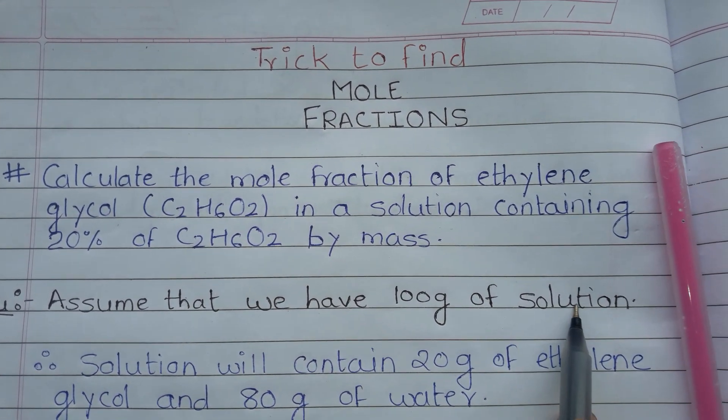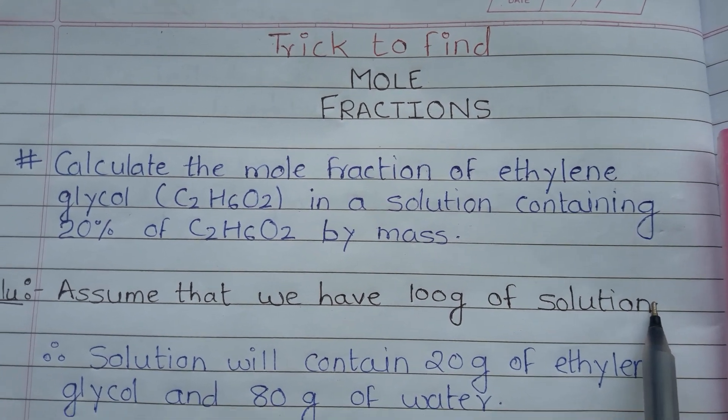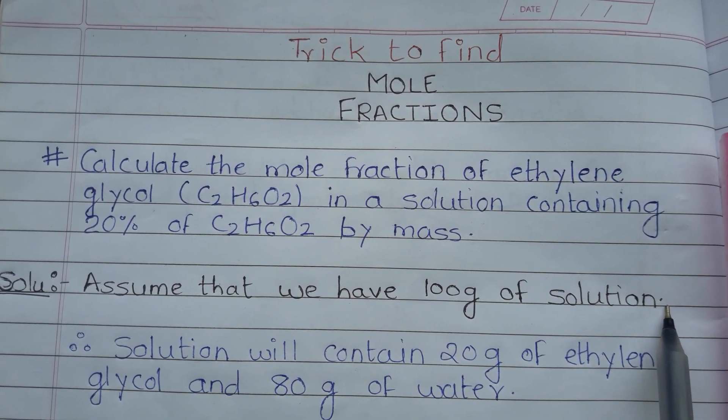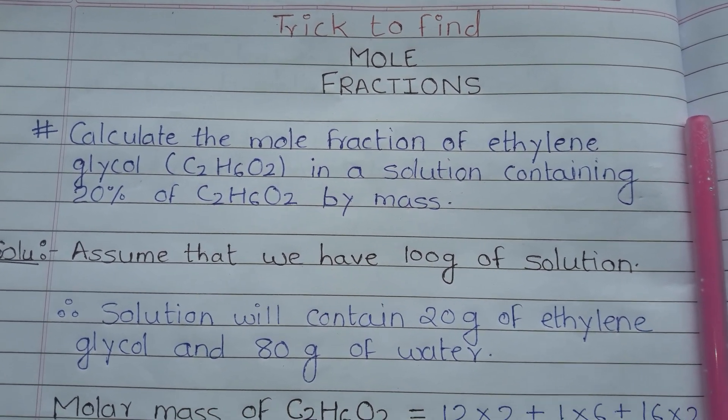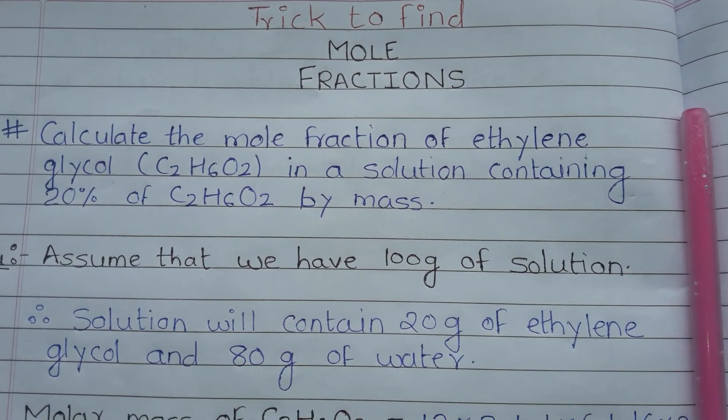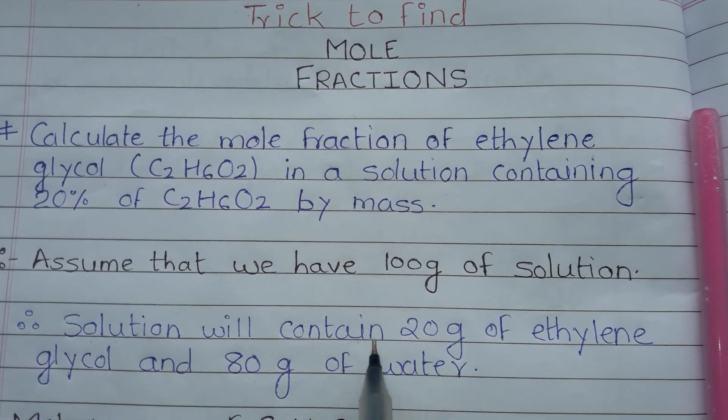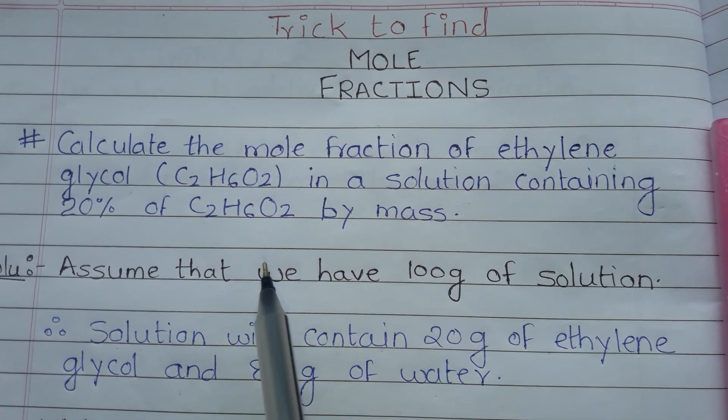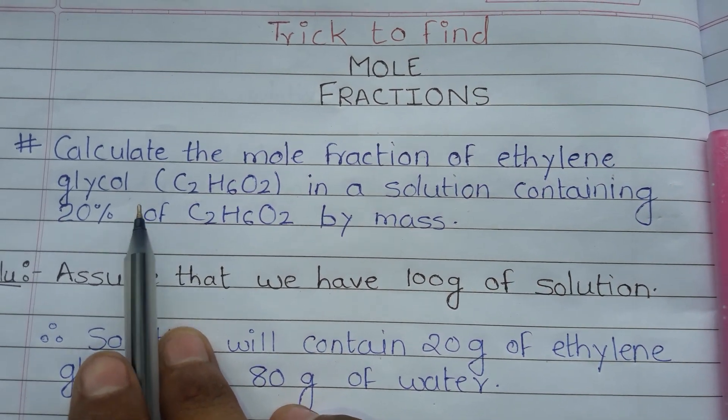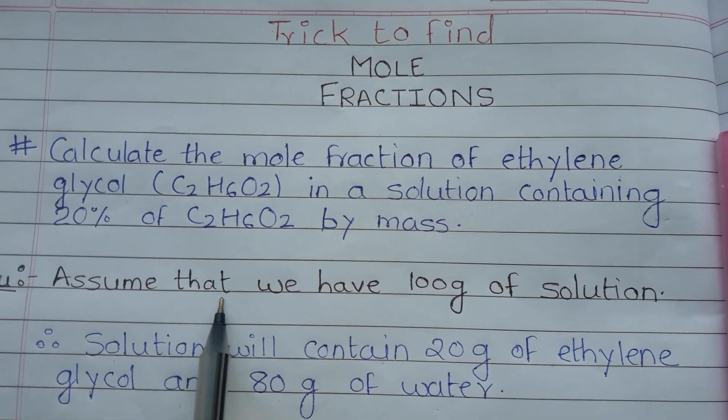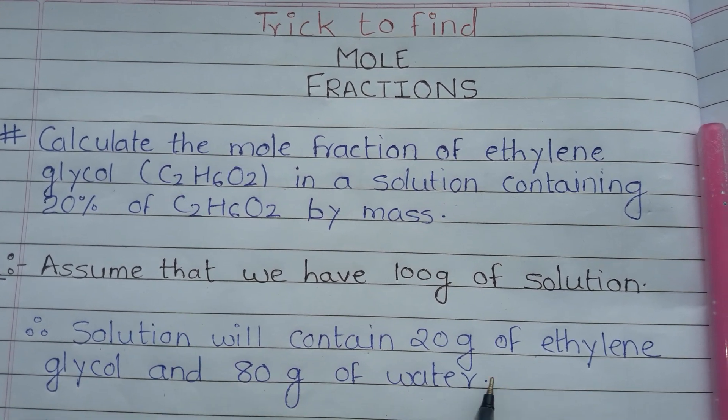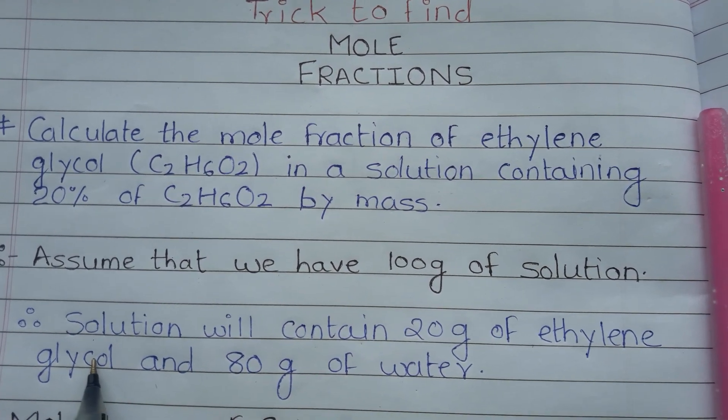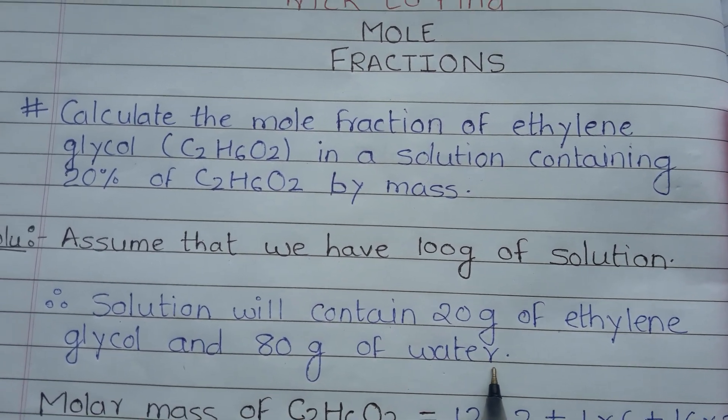Assume that we have 100g of solution. If we have 100g ethylene glycol solution, the solution will contain 20g of ethylene glycol and 80g of water, because the question states that our ethylene glycol solution is 20%. If we assume 100g solution, then we have 20g ethylene glycol and the remaining 80g of water.